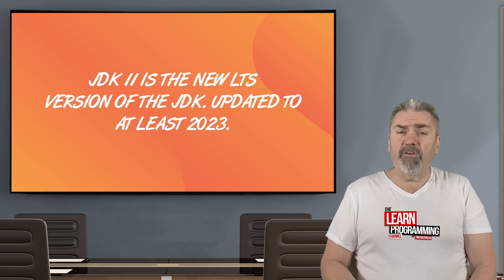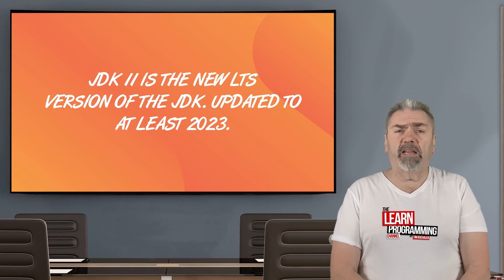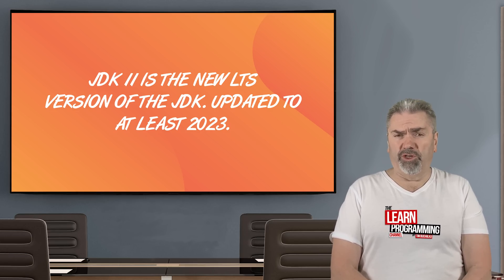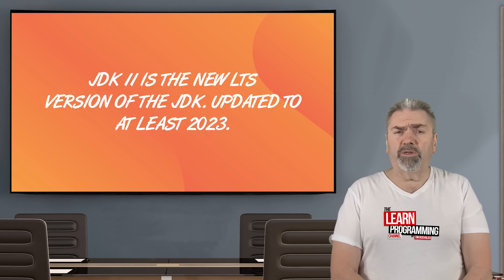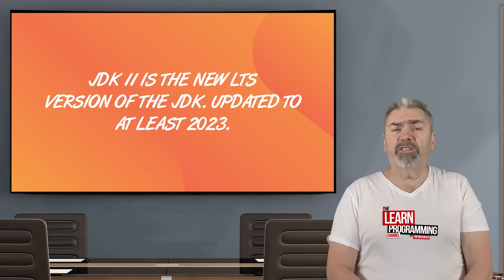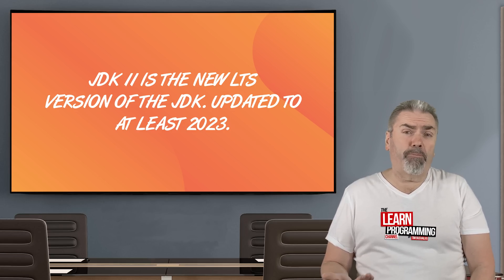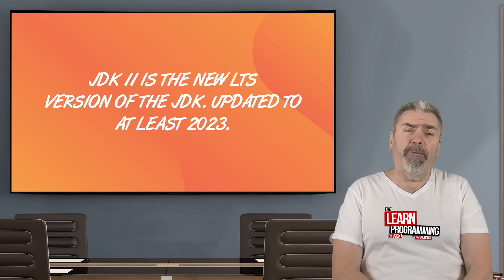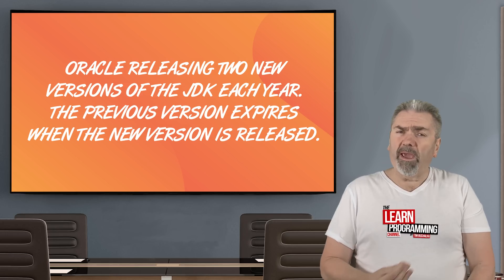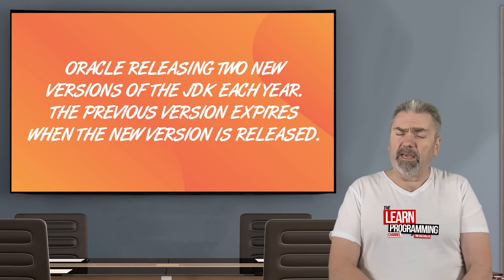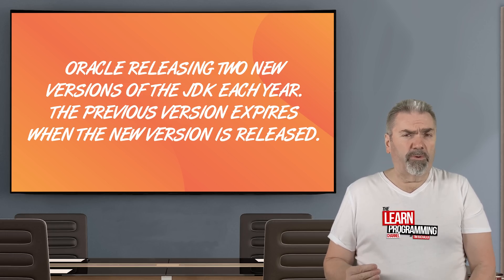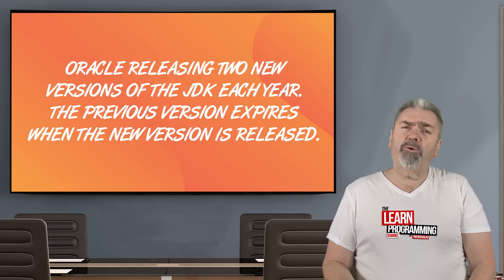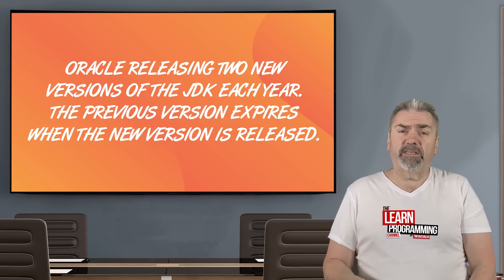JDK 11 is the version now that Oracle are telling us is the long-term support version. So in other words, that's going to be supported until at least 2023 and probably longer than that. But where it gets confusing is that there's this long-term support version 11, but they're also releasing a version of the JDK every six months.